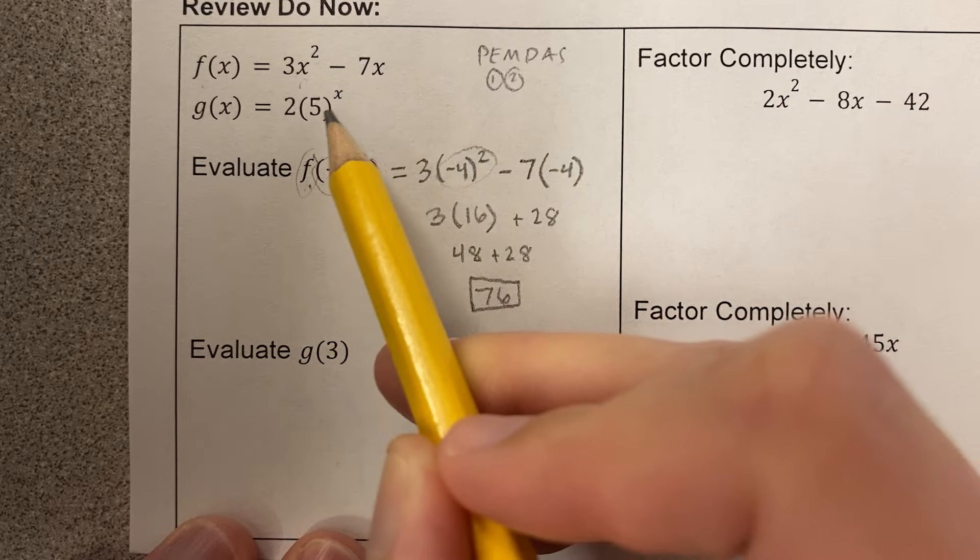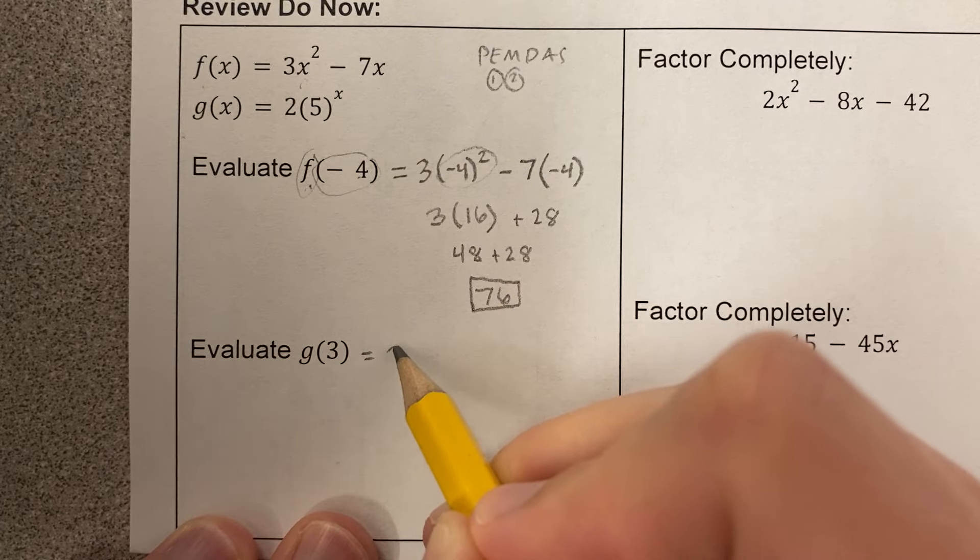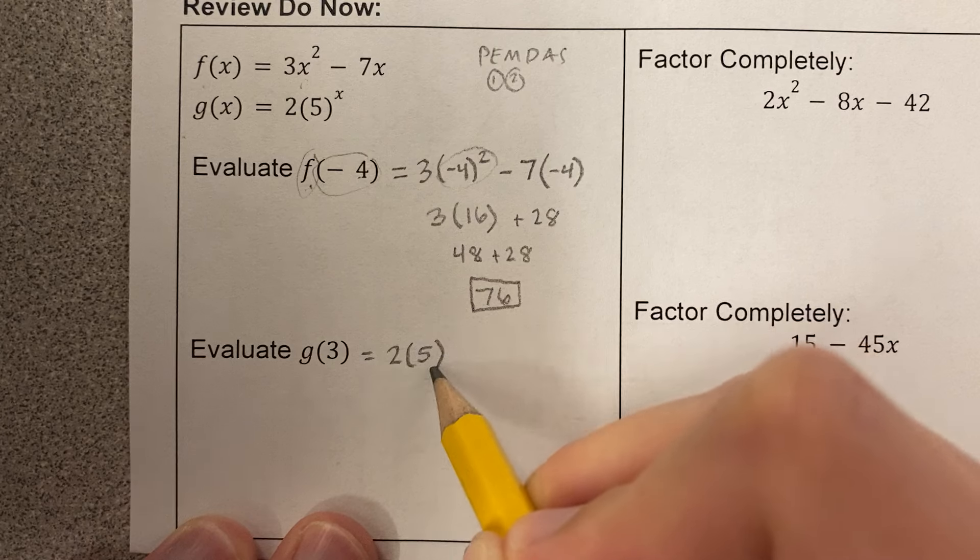Evaluate g of 3. This time, I'm taking my g equation. I'm plugging in 3 for x. So this is 2 times 5 to the power of 3.